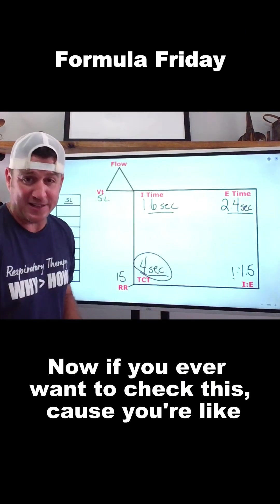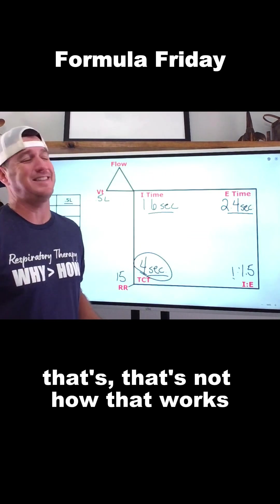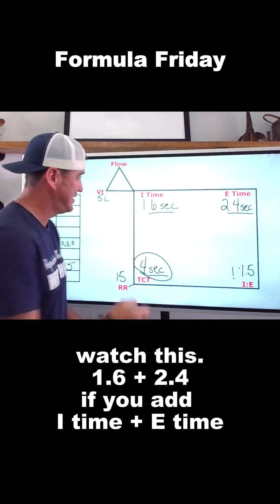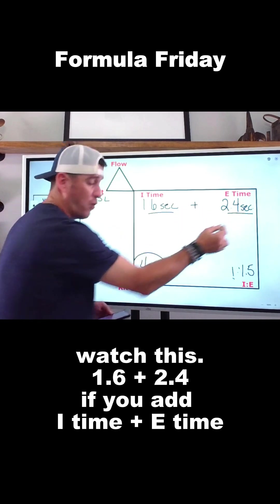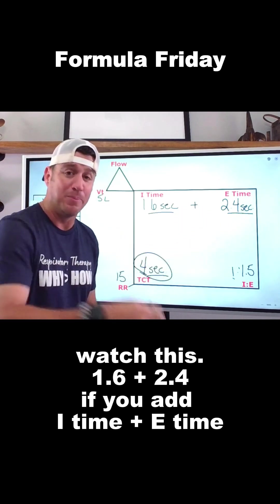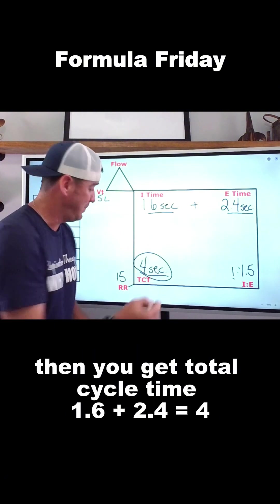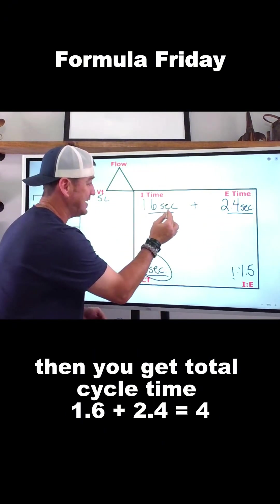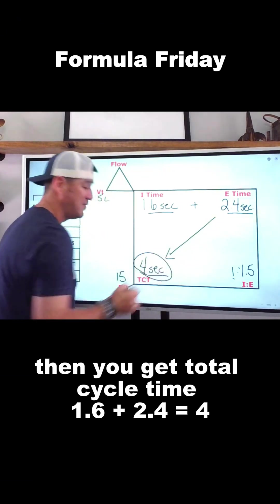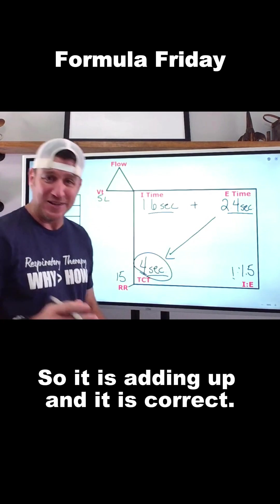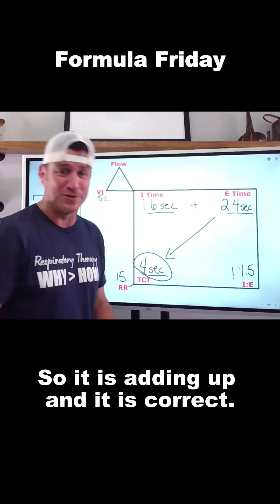Now, if you ever want to check this because you're like, that's not how that works, watch this. 1.6 plus 2.4. If you add I time plus E time, then you get total cycle time. 1.6 plus 2.4 equals 4. So it is adding up, and it is correct.